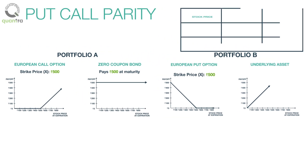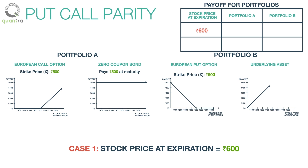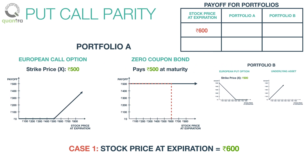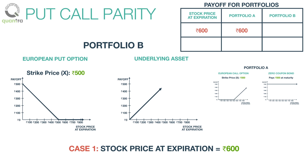Now we calculate the payoff for both portfolios. If the stock price goes up to 600 rupees at expiry, for portfolio A, the value of the zero coupon bond at expiry is 500 rupees and the payoff of the call option is 100 rupees, that is 600 rupees minus 500 rupees. Therefore, the total worth of portfolio A is 600 rupees — the same as the stock price. Since the put option expires worthless, as share price is higher than the strike price, portfolio B is also worth 600 rupees.